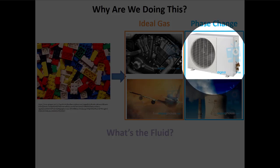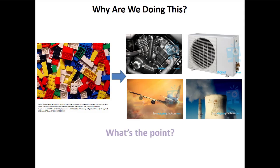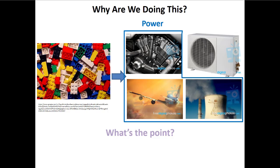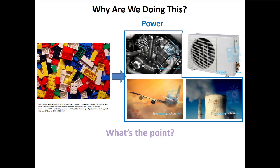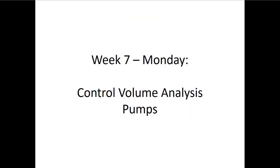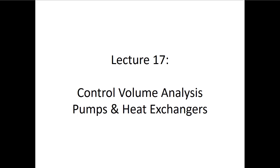In refrigerators and air conditioners, the working fluid isn't actually water — it's a refrigerant — but it acts like water because we're near the vapor dome. We can also characterize these systems by their purpose: heat engines like internal combustion engines, jet engines, and nuclear power plants take heat and turn it into usable mechanical energy. Air conditioners run in reverse — we put mechanical energy in by running a compressor, which transfers heat in the direction it wouldn't normally want to go. This is Lecture 17, covering control volume analysis examples for pumps and heat exchangers.